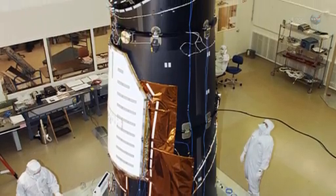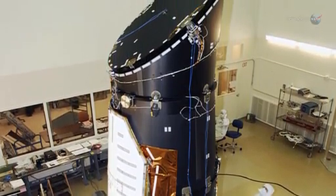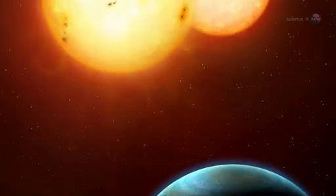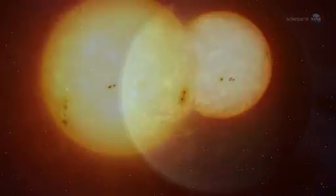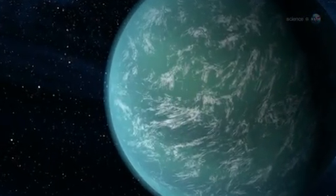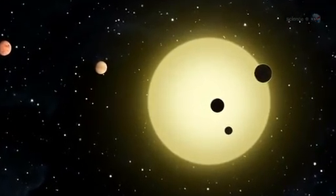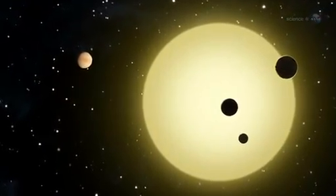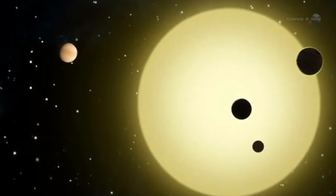NASA's Kepler spacecraft is discovering a veritable avalanche of alien worlds. Recent finds include planets with double suns, massive super-Earths and hot Jupiters, and a miniature solar system. The variety of planets circling distant suns is as wonderful as it is surprising.